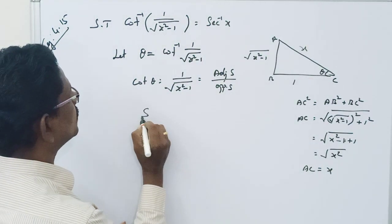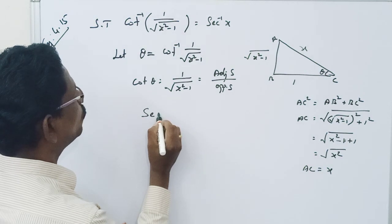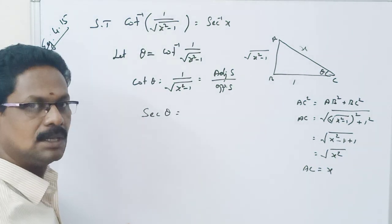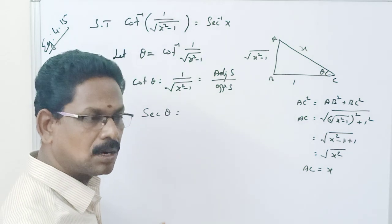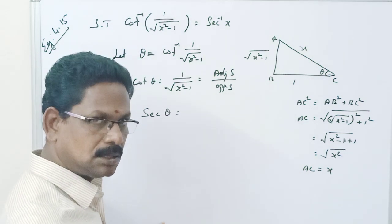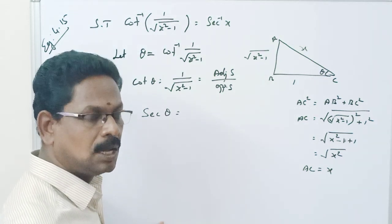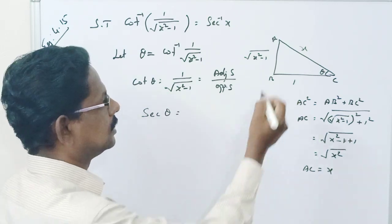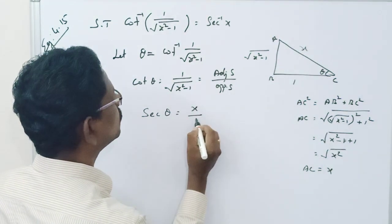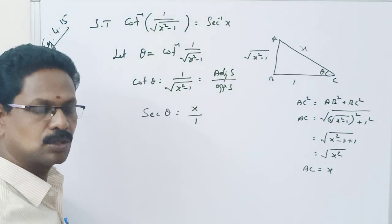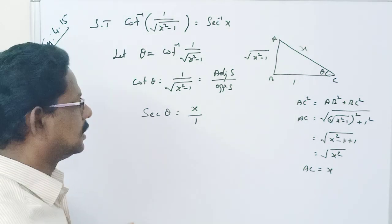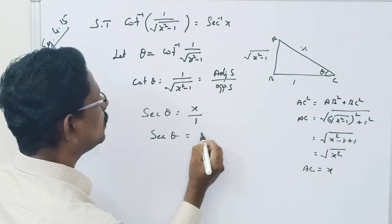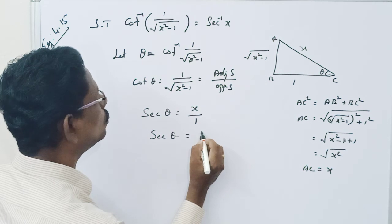What is secant theta? Cos theta is adjacent side by hypotenuse, therefore secant theta is hypotenuse by adjacent side. So secant theta equals hypotenuse x divided by adjacent side 1, therefore secant theta equals x.